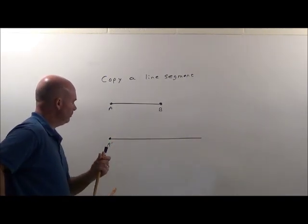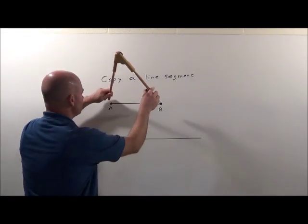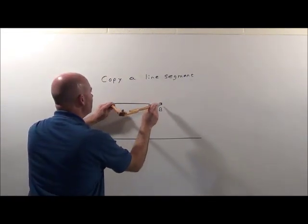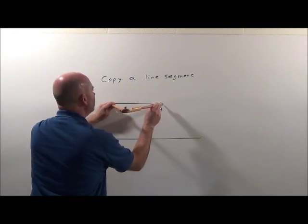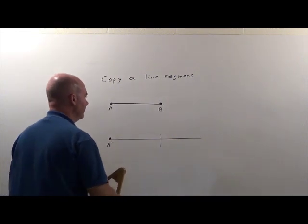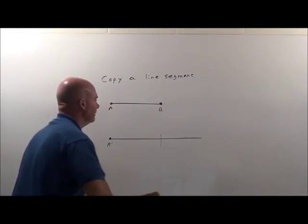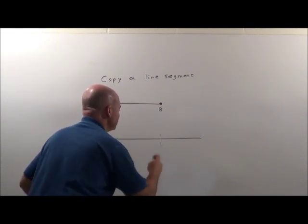Now, what I'm going to do is simply spread it out to measure the distance A to B, and then simply bring it down here, make my marking, and right to that point will be the same length.